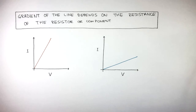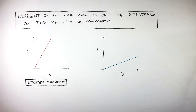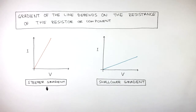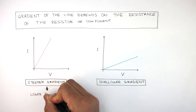The graph on the left has a steeper gradient and the graph on the right has a shallower gradient. We know the gradient of the line depends on the resistance of the resistor or the component in the circuit. So the graph on the left has a steeper gradient; therefore we can interpret this component as having a lower resistance.